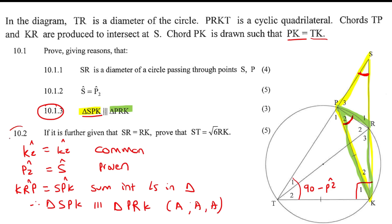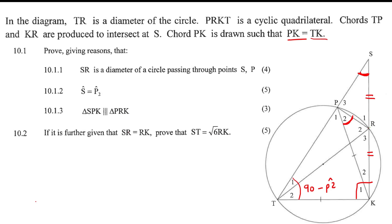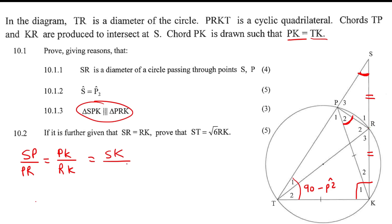For five marks, the last question: if it is further given that SR and RK are the same length, prove that ST equals root 6 times RK. The first thing to do is take the similarity result and write the ratios: SP over PR equals PK over RK equals SK over PK, because those triangles are similar.